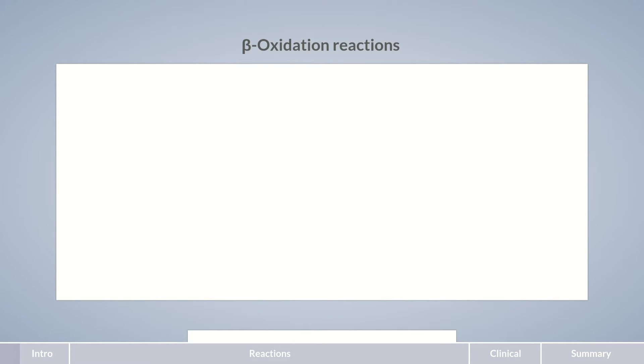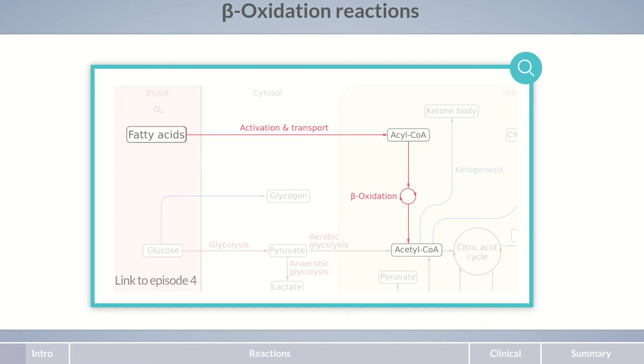Energy Metabolism, Part 5, Beta Oxidation Reactions. In the last Chalk Talk episode, we learned that activated fatty acids are degraded in beta-oxidation. The enzymes involved cleave the fatty acid to form the two-carbon unit acetyl-CoA. Cleavage occurs at the beta-carbon atom, C3, and involves four reaction steps.